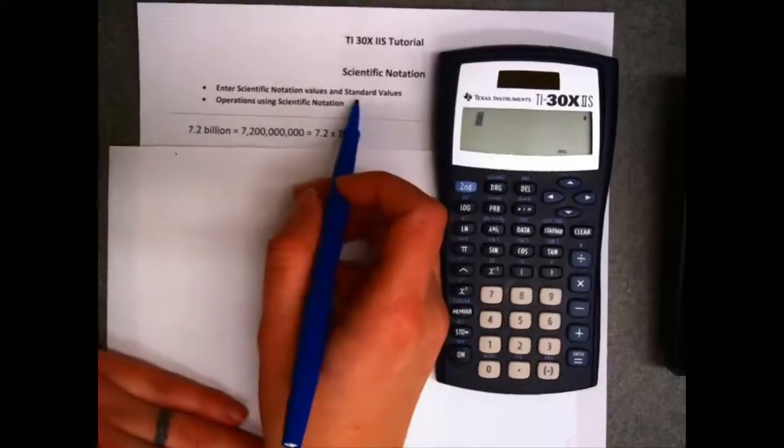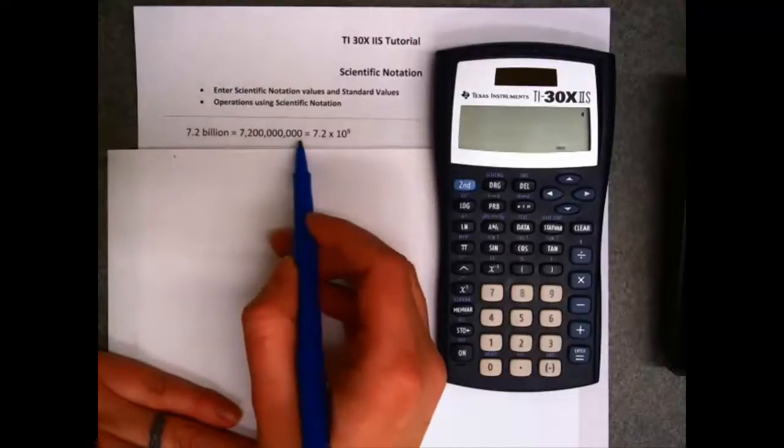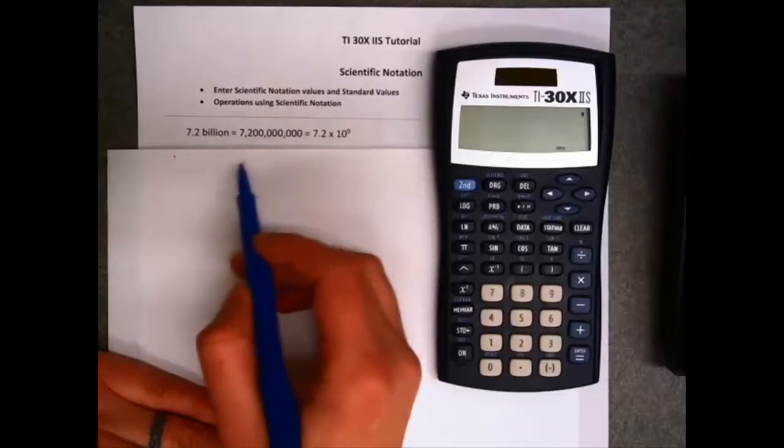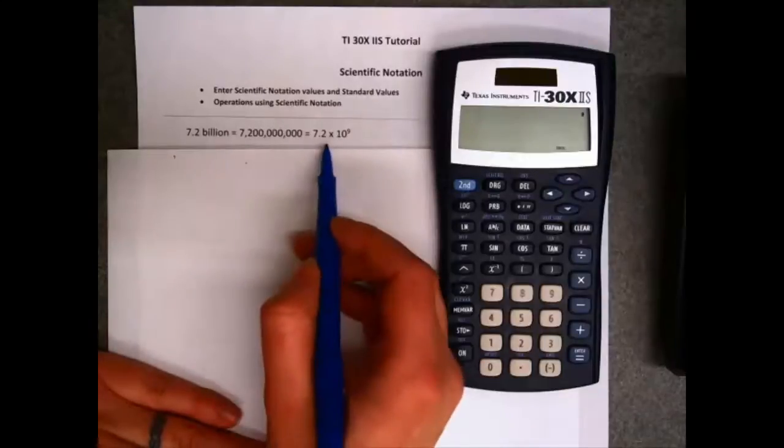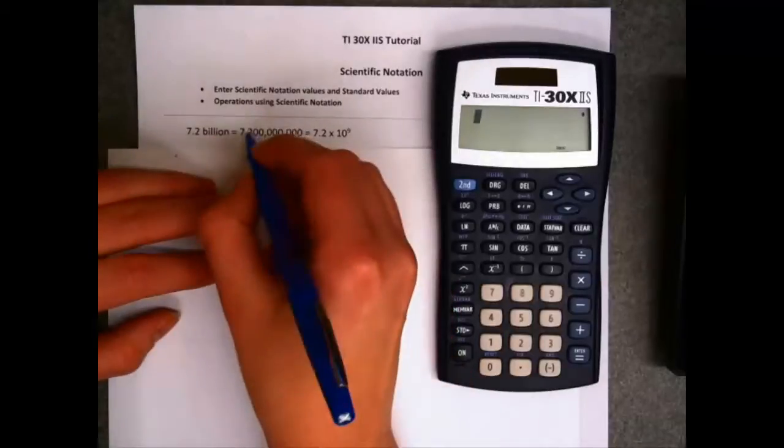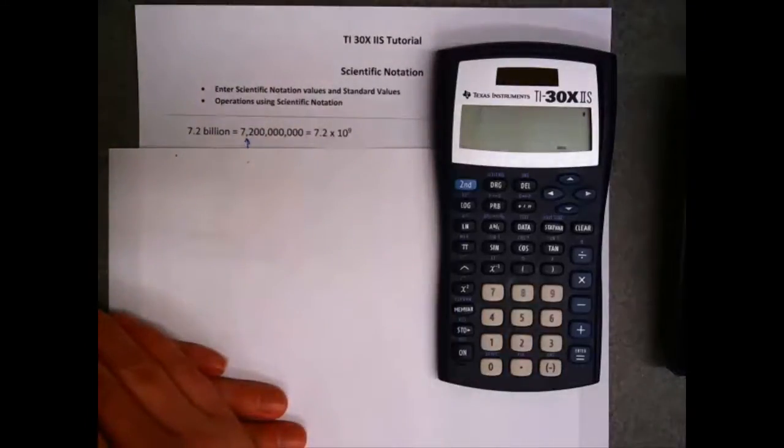where standard values just means regular numbers. So the world population is about 7.2 billion. As a regular number, that looks like this. A 7, a 2, and then 8 more zeros. In scientific notation, we write that as 7.2 times 10 to the 9th, because in scientific notation, we only want one digit in front of our decimal place.